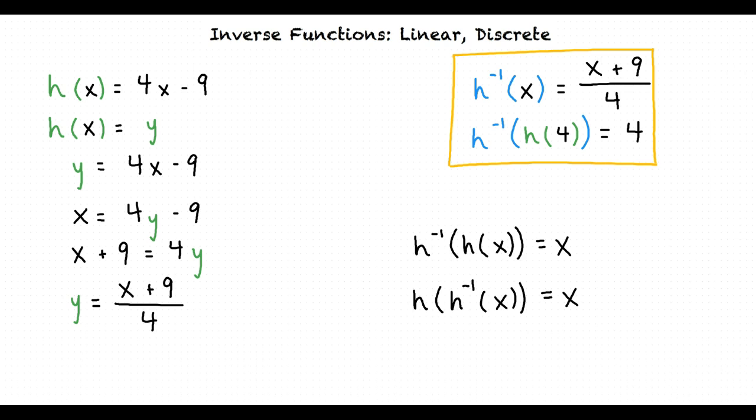Alright, so let me see if I have this all straight. If we are given a list of ordered pairs to find the inverse, we switch the x and y values. If we are given an equation representing a function to find the inverse, we switch the variables x and y and solve for y.